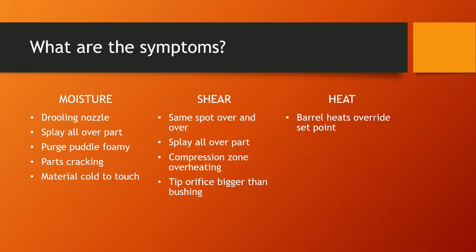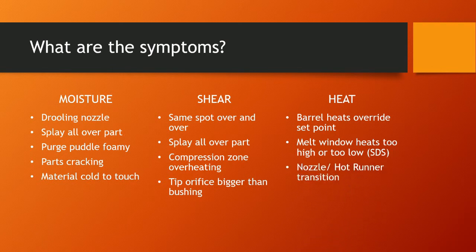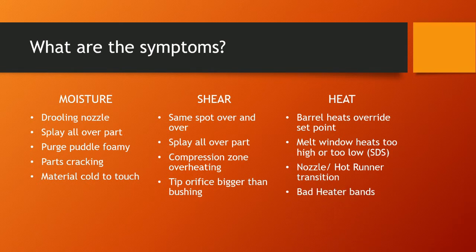Then you have heat. Barrel heats might override the set point. Mold window heats would be too high or too low for the SDS. Too high, and you end up with overheating; too low, and you end up with too much shear. You also want to pay attention to the nozzle-to-hot-runner transition. Hot runner temperatures should be pretty close to the nozzle temperature, as the hot runner is considered an extension of the nozzle. You also have the potential for bad heater bands — test by rubbing a piece of plastic on the band; if it doesn't melt, you may have a bad band.